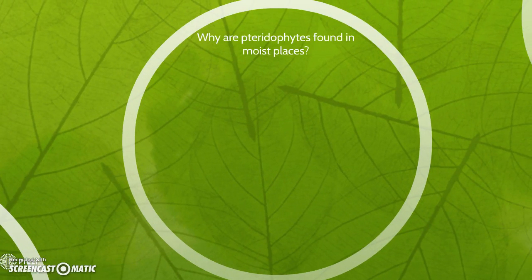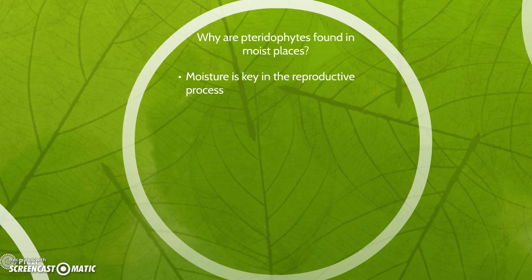Now, to answer the question: why are these pteretophytes, such as ferns, so commonly found in damp and moist places? Well, simply put, it is because the moisture helps the reproductive process in many of these plants.